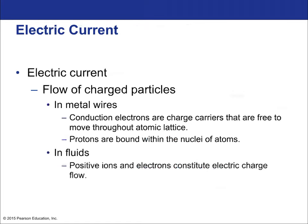Regarding electric current: in metal wires, conducting electrons are the charge carriers that are free to move — the protons are bound within the nuclei. In fluids, positive ions and electrons constitute electrical charge flow. So you can definitely have positive charge carriers in the case of a fluid, like a microfluidic device used for some sort of mimicry of a circuit.